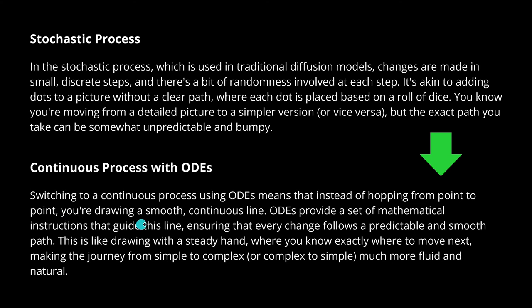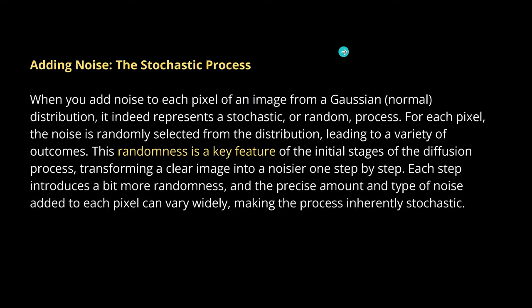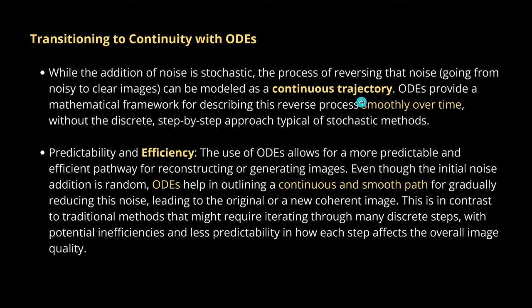Instead of hopping from point to point, we are now drawing smooth, continuous lines — a clear geometric object that is mathematically easy to calculate. With the continuous trajectory, even the reverse process is smooth over time development, leading to better computational efficiency and better mathematical predictability. You might ask why we keep reducing complexity through simplification — it helps us have a continuous, smooth path for gradually reducing the noise, leading to either the original or new coherent images of unseen objects.